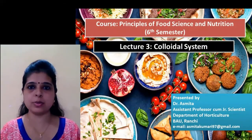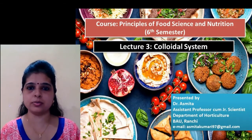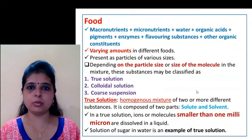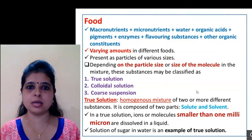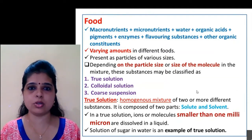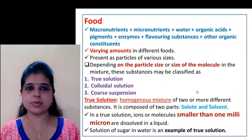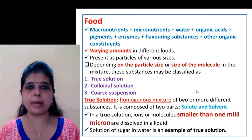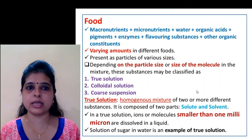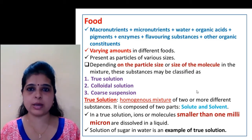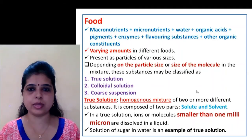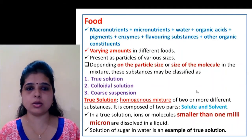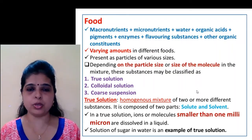In your course, Principles of Food Science and Nutrition, before discussing the colloidal system, I have told you earlier that what is food. Food is a substance that is composed of macronutrients, water, organic acid, pigments, gums, flavoring substances, and other organic constituents. These constituents vary in different quantities in different food.